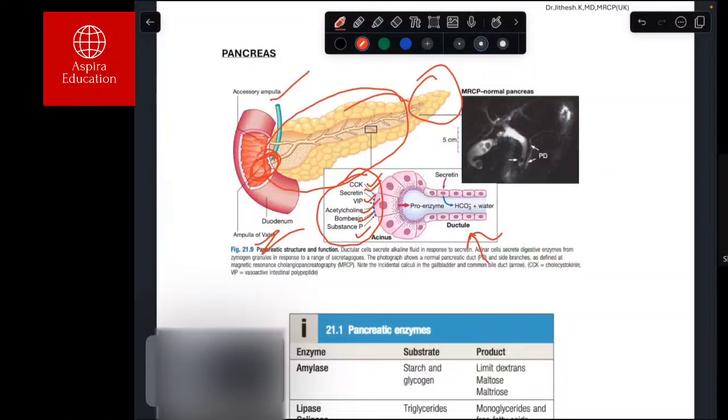These hormones cause the release of proenzymes like trypsinogen and chymotrypsinogen. Secretin is a particular hormone that causes the release of bicarbonate and water, while cholecystokinin, VIP, acetylcholine cause the proenzymes to be released. Secretin causes bicarbonate and water release—that difference you have to know.